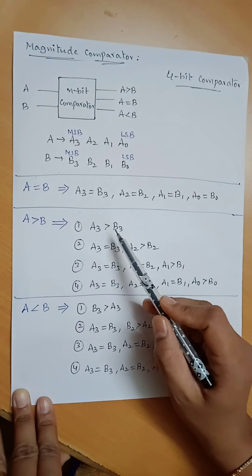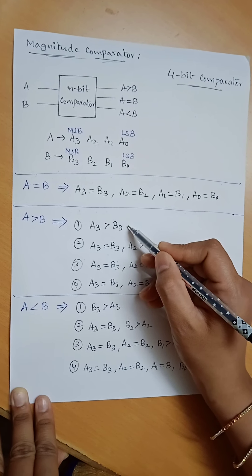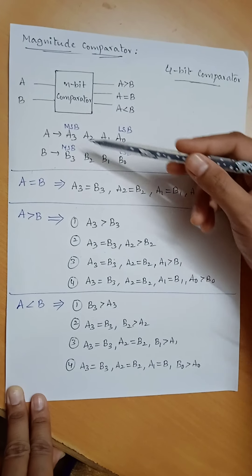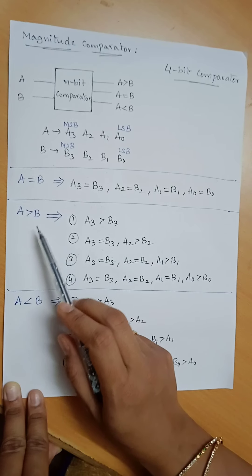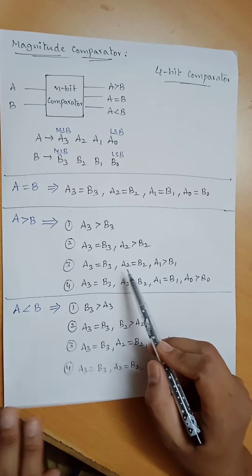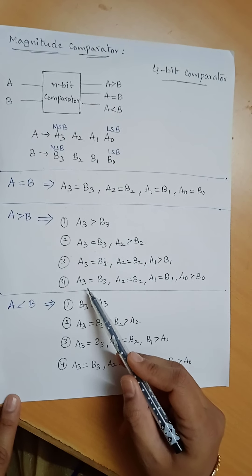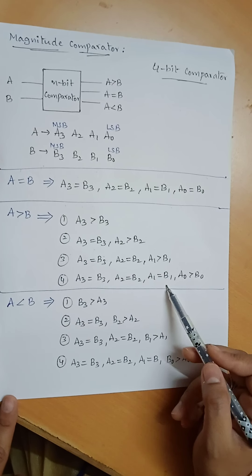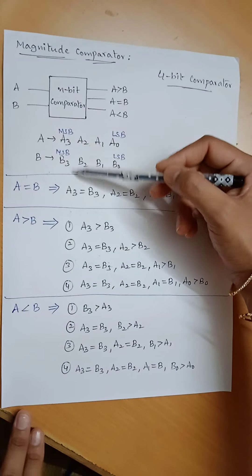For A greater than B, if A3 is greater than B3, we can conclude that A is greater than B. Another case: if A3 equal to B3 and A2 greater than B2, A is greater than B. Third possibility: A3 equal to B3, A2 equal to B2, and A1 greater than B1. Fourth possibility: A3 equal to B3, A2 equal to B2, A1 equal to B1, A0 greater than B0. Comparison always starts from the MSB bit.